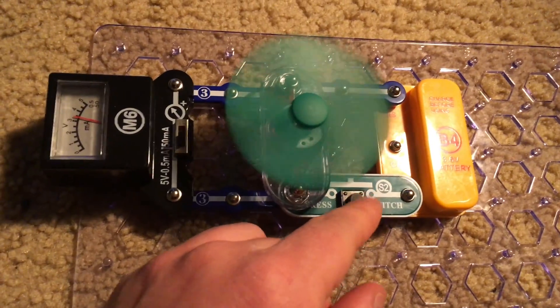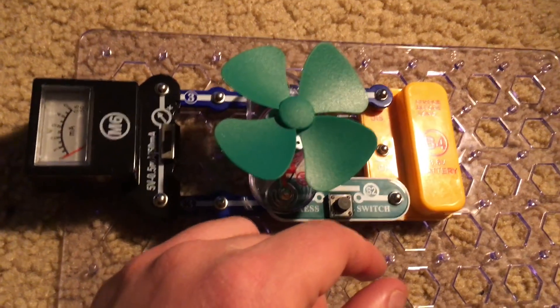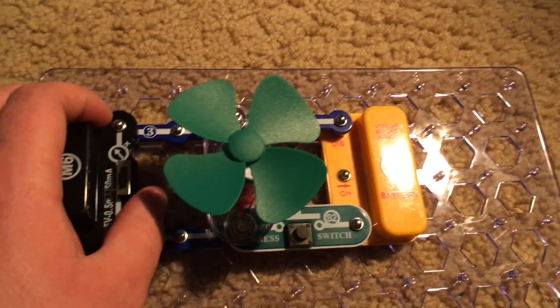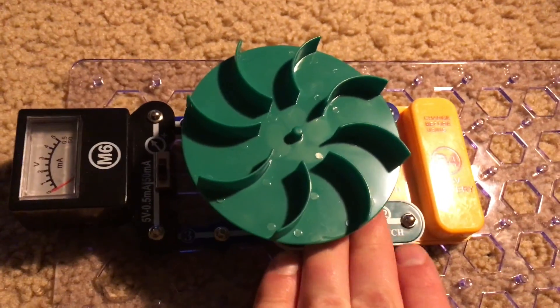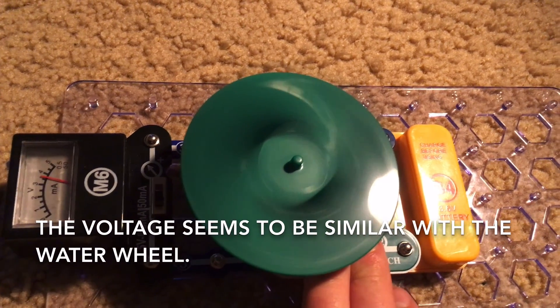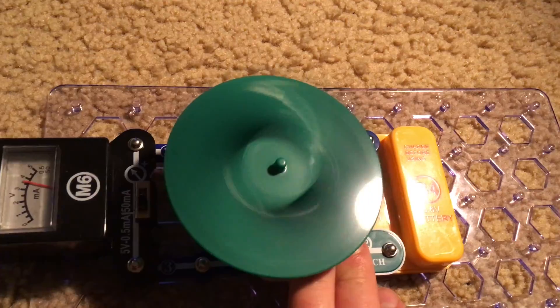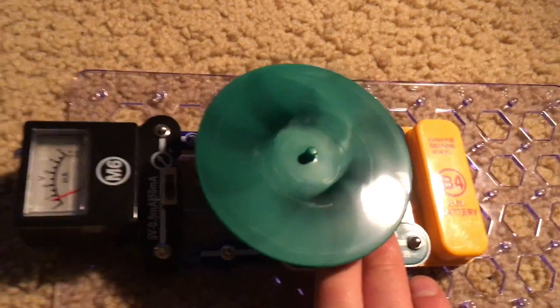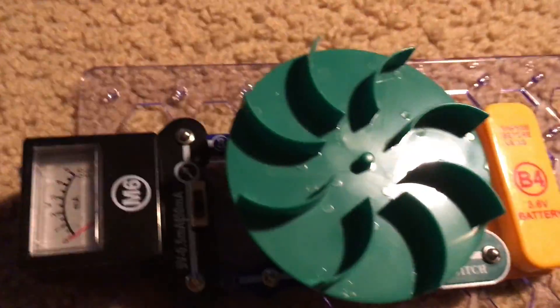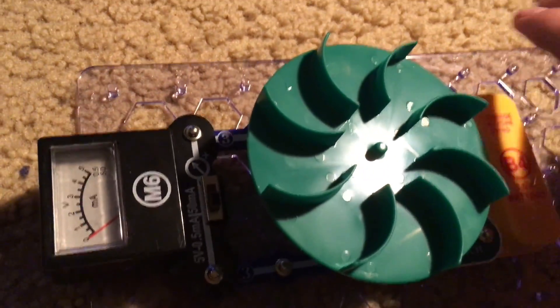Now we can try replacing the fan with the water wheel. Voltage seems to be similar. Now we can try to spin the water wheel without holding down the switch and see if any voltage is produced.